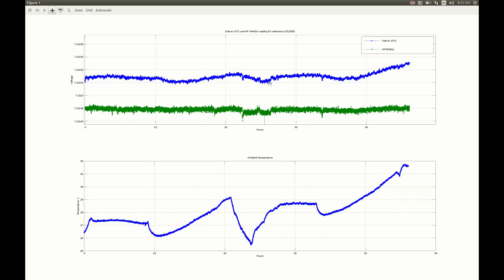It moved from this lowest point which corresponds to this lowest point of the temperature, with some time lag, to this highest point. The difference is about 5 ppm or so, and the difference in temperature is about 6 degrees. So 5 ppm over 6 degrees is about 0.8 ppm per degree, which is not bad at all. But Hewlett-Packard seems to be more stable.